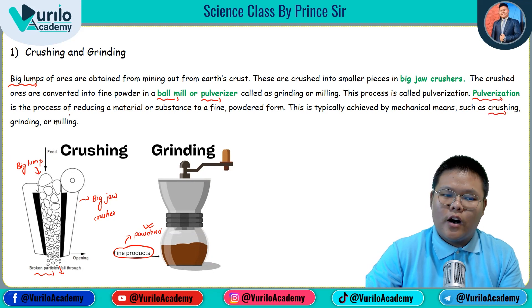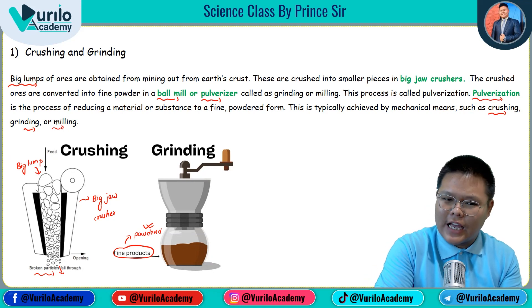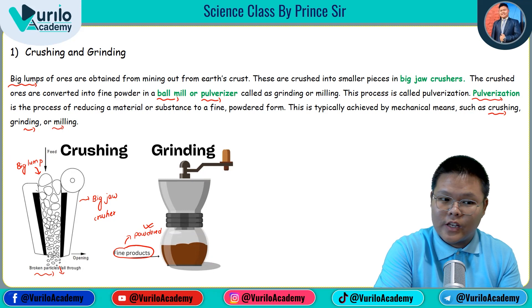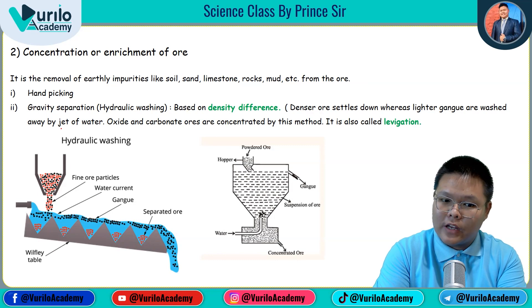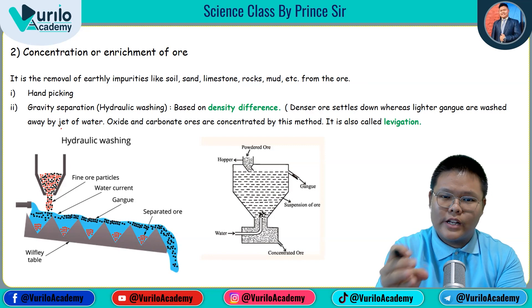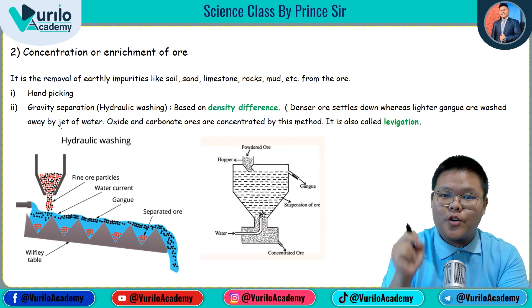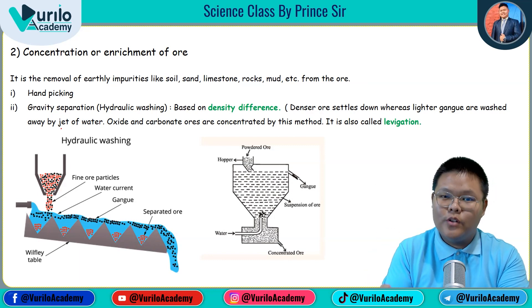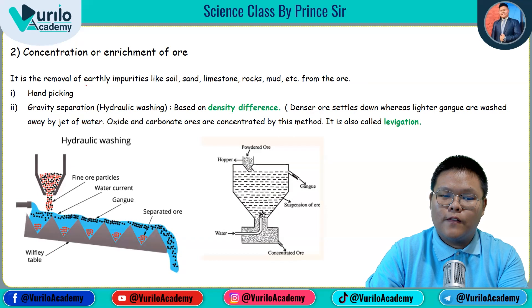In pulverization: first is crushing, second is grinding or milling. Crushing and grinding are generally important steps. The second process is concentration of the ore, which is the enrichment of the ore — the removal of earthly impurities.